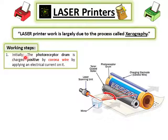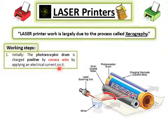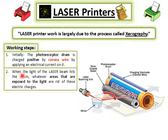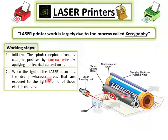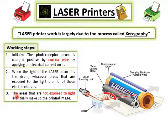Initially, we have the photoreceptor drum, which is charged positive by the corona wire. The corona wire charges the photoreceptor drum positively by applying an electric current on it. When the light of the laser beam hits the drum, the areas exposed to light are rid of their electric charges. The areas not exposed to light eventually make up the printed image.